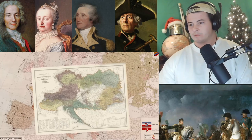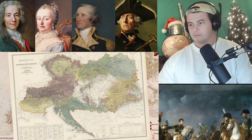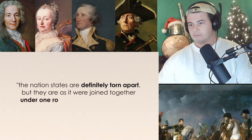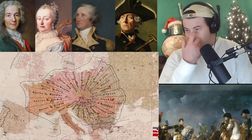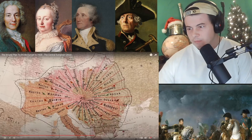The proposal would likely cause even more trouble than the Treaty of Versailles, especially in countries from the old Austro-Hungarian Empire and the Balkans, eager for their independence. In the pamphlet he wrote: 'The nation states are definitely torn apart, but they are joined together under one roof by creating sub-regions in which all nations are fused.' Each canton was to be named after its capital city — Munich, Paris, Berlin, Geneva, Budapest, Versailles, among others.